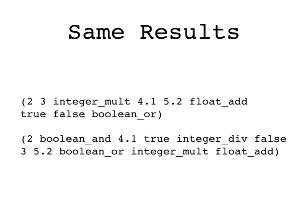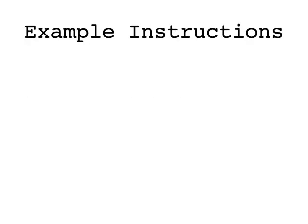Here are two programs that look pretty different but do the same thing. In the first, it's easy to see that it multiplies two and three, adds 4.1 and 5.2, and computes the result of or on true and false. The second does the same thing, except the operations on the different types are interleaved and a couple of instructions are included that won't do anything because there won't be enough inputs for them when they're executed.